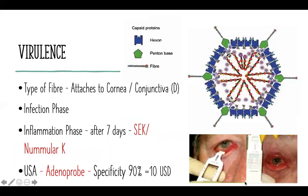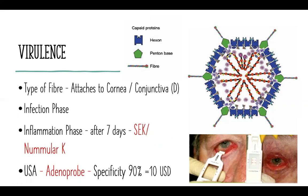Looking at the structure of a virus, the green elements are the penton base, the blue are the hexon, and the protruding parts are the fibers. These fibers are the main source of virulence — D-type fibers are particularly notorious in attaching to the cornea or conjunctiva. The infection phase is limited to the first seven days, and the inflammation phase starts after seven days, when you are likely to see nummular or sub-epithelial keratitis.